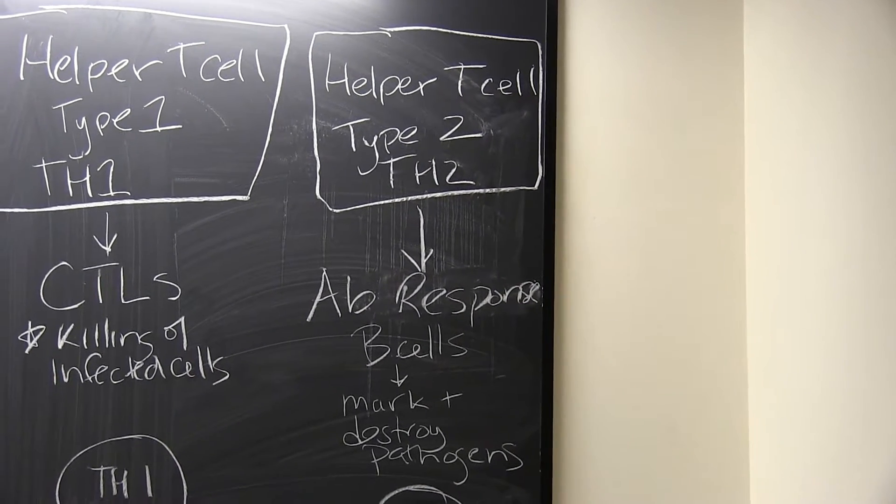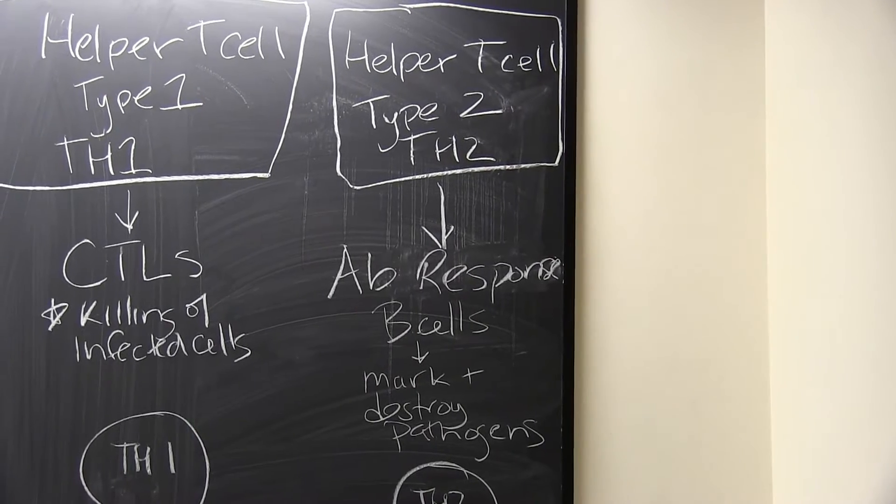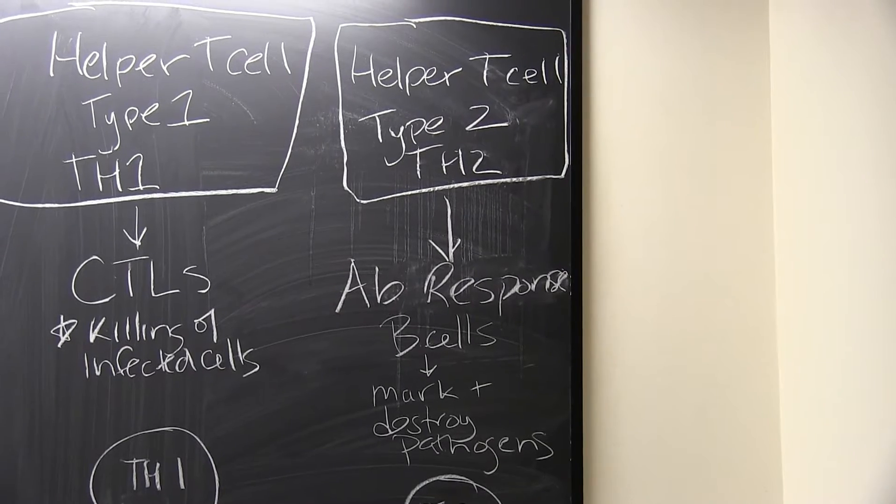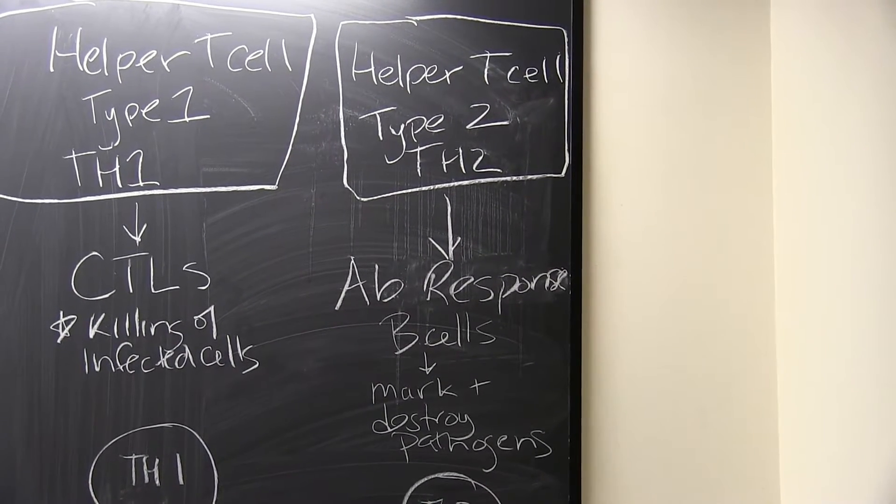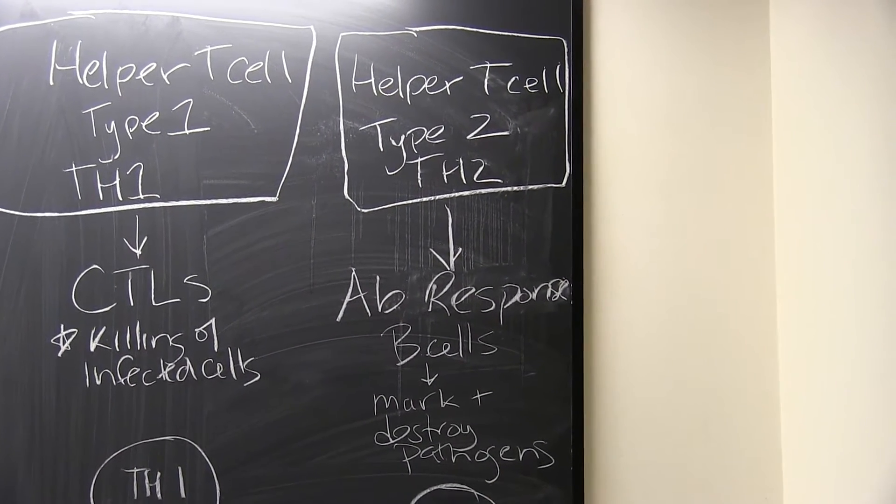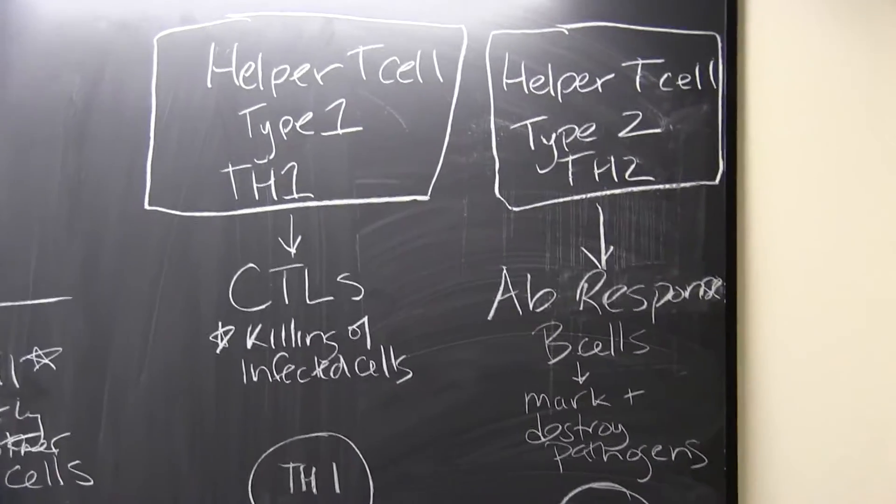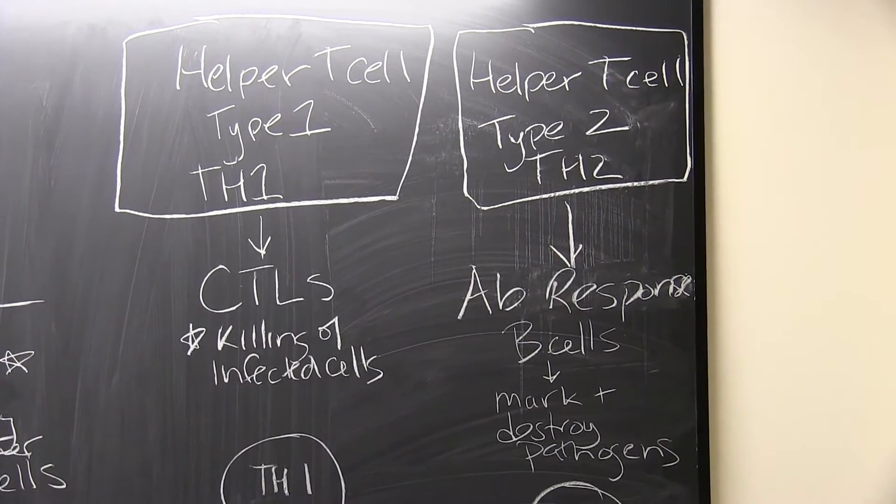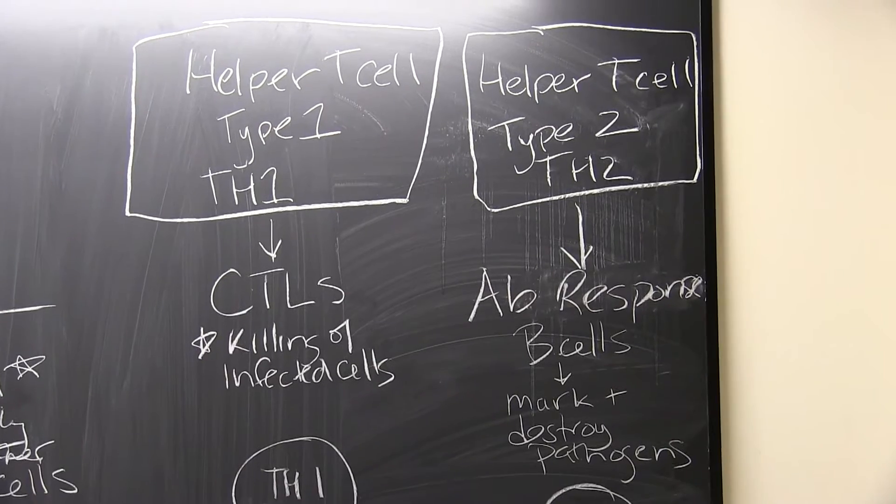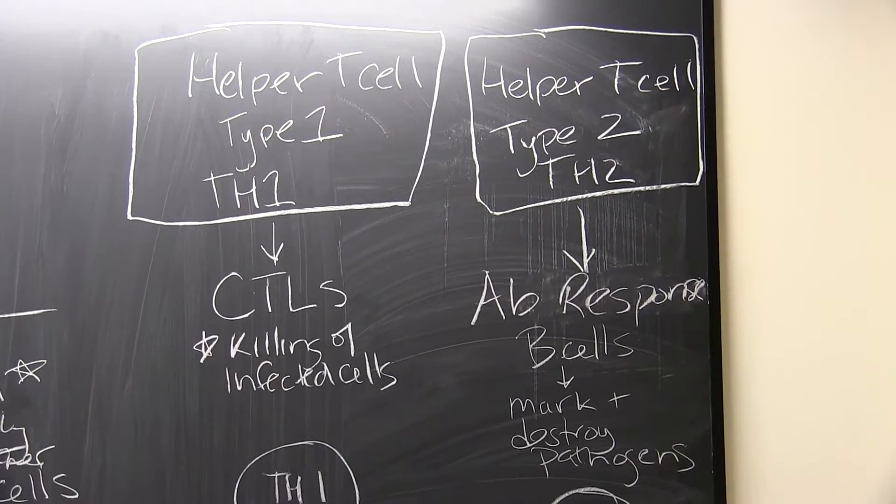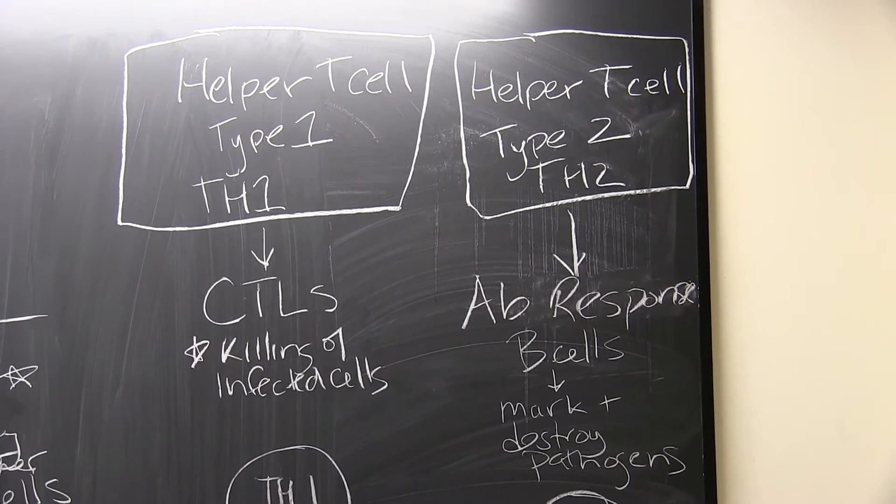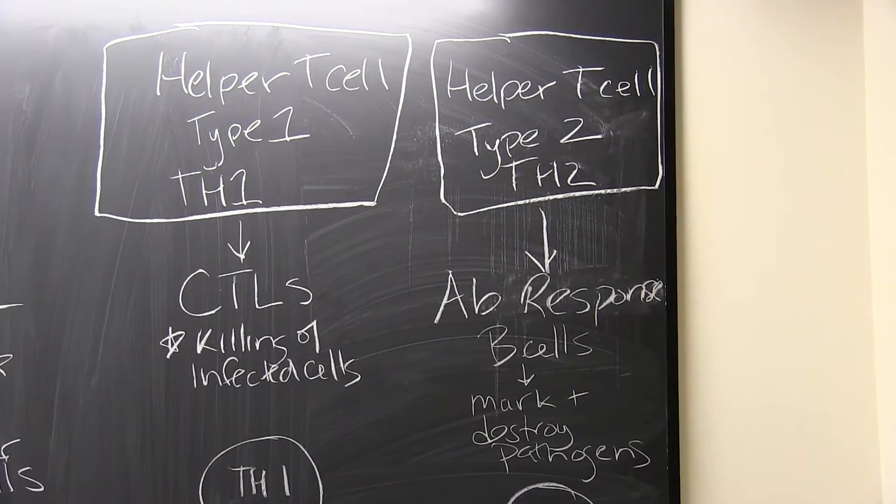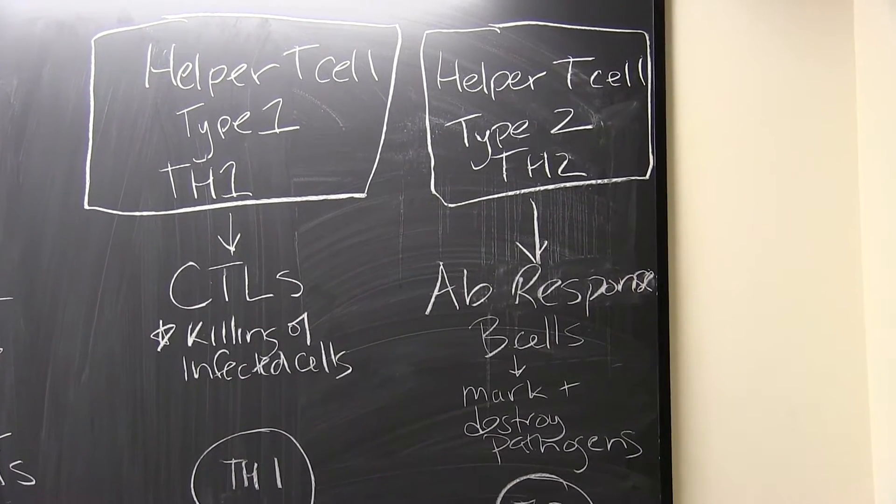Remember, the purpose of antibodies is to mark and destroy pathogens so cells like macrophages can come along and directly destroy the pathogen. That's the big difference between killer T-cells and antibodies. Killer T-cells kill infected cells. Antibodies, which are made by B-cells, are not cells at all. They're small proteins that can attach to particular antigens on the pathogen and mark them for destruction.